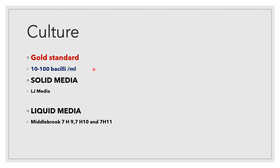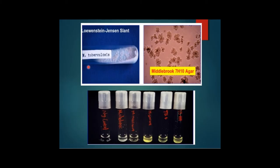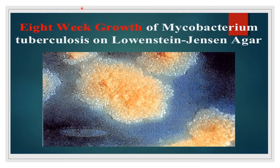Culture is a gold standard method requiring at least 10 to 100 bacilli per ml of sputum to grow. Solid culture media include Lowenstein-Jensen (LJ) media, which is an egg-based medium with added glycerol. Liquid media are Middlebrook 7H9, 7H10, and 7H11. MTB colonies are rough, tough, and buff in color, as seen in 8-week growth on LJ media. Atypical mycobacteria show rapid growth with smooth colonies.